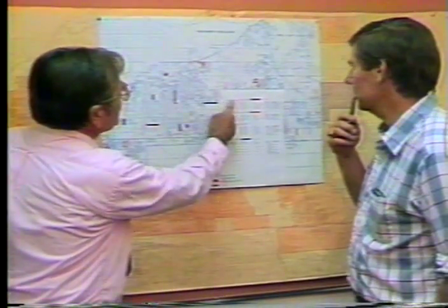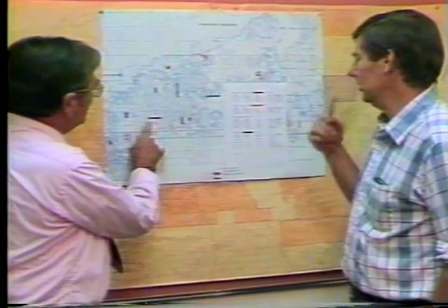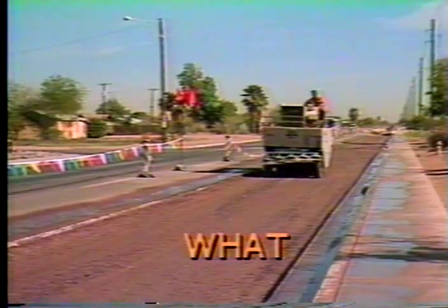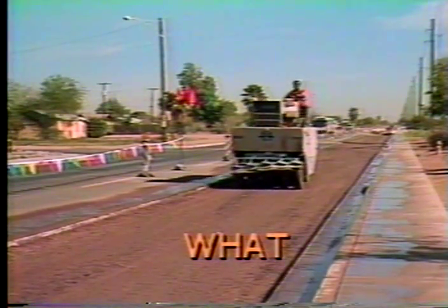Pavement engineers must make three basic decisions about pavement repair or maintenance: one, where the pavements are that require attention; two, when repairs are required; and three, what is the appropriate repair method or repair strategy. The engineer cannot arrive at these decisions by himself. He must have guidance from administrators and elected officials on the level of the budget available and the level of pavement quality expected by the community.